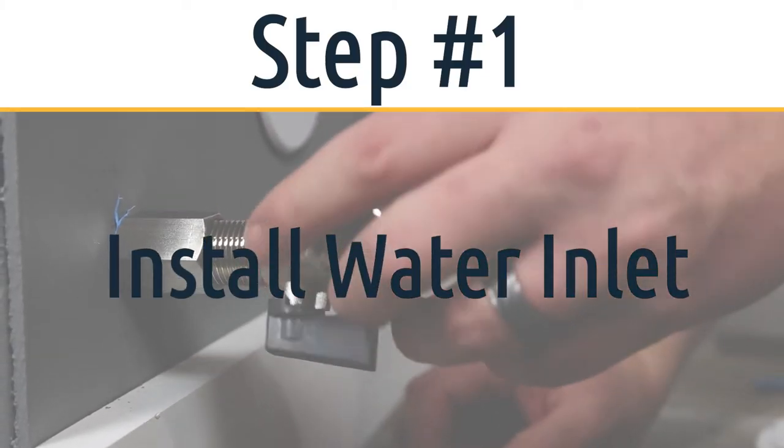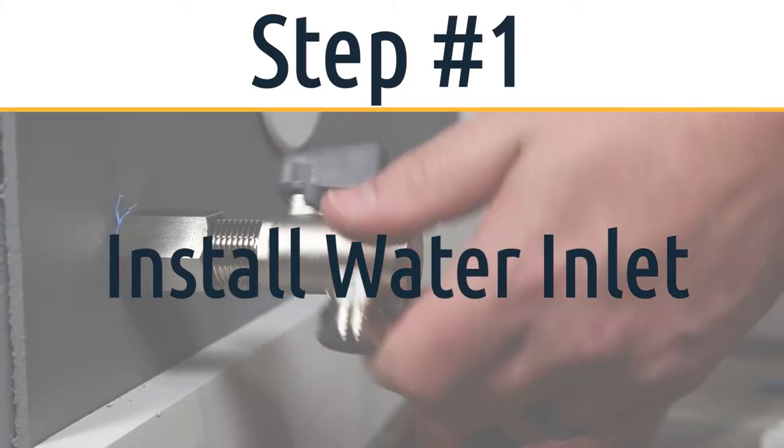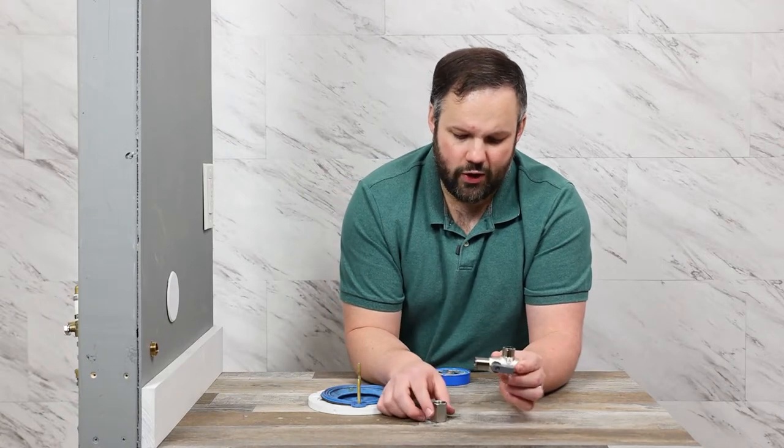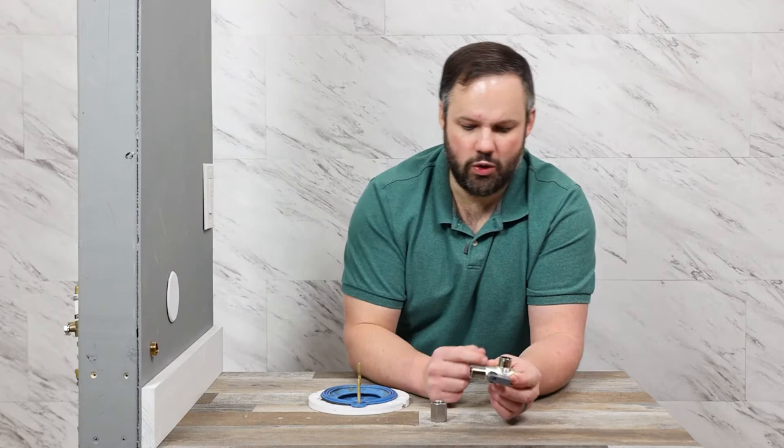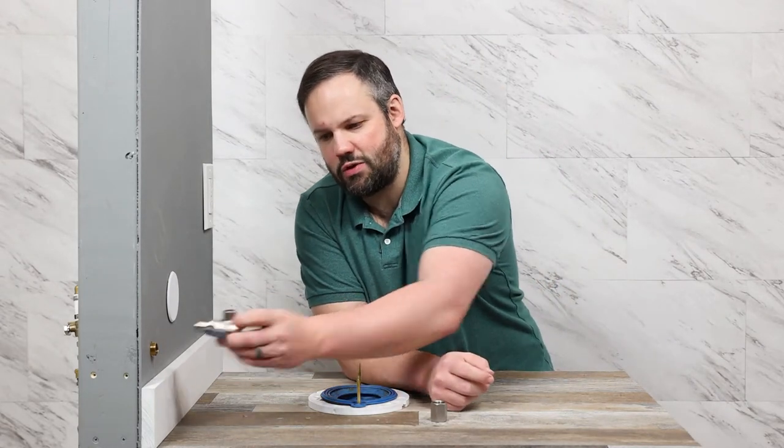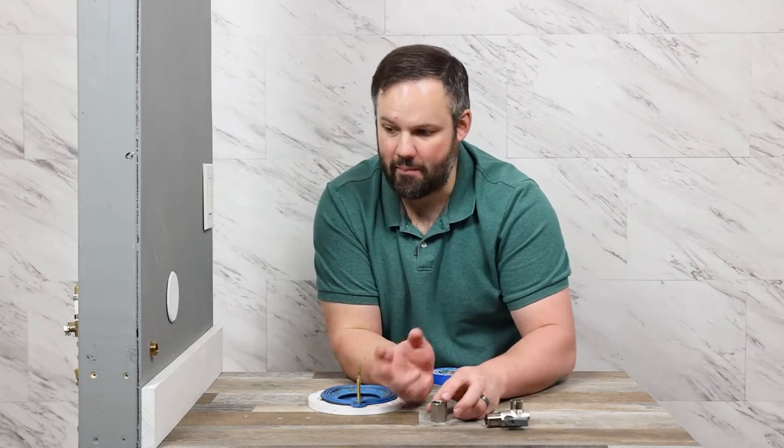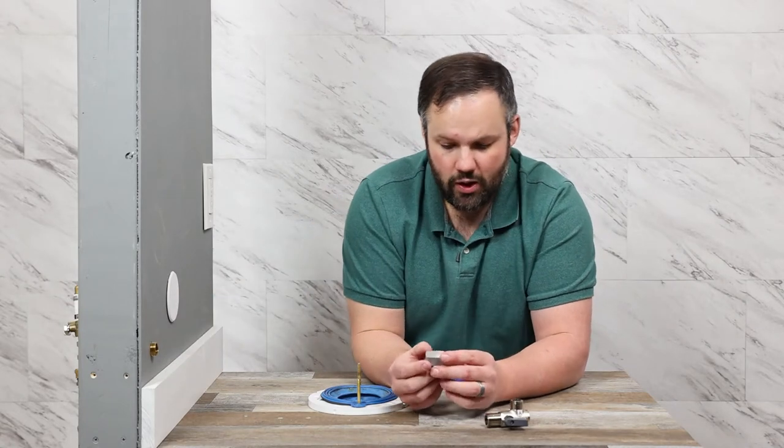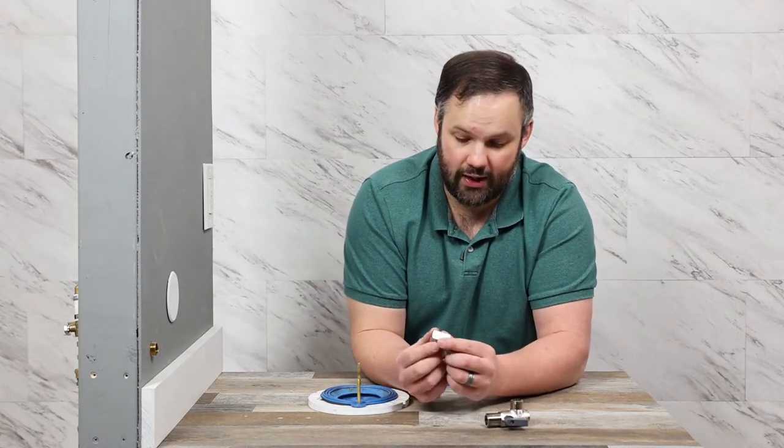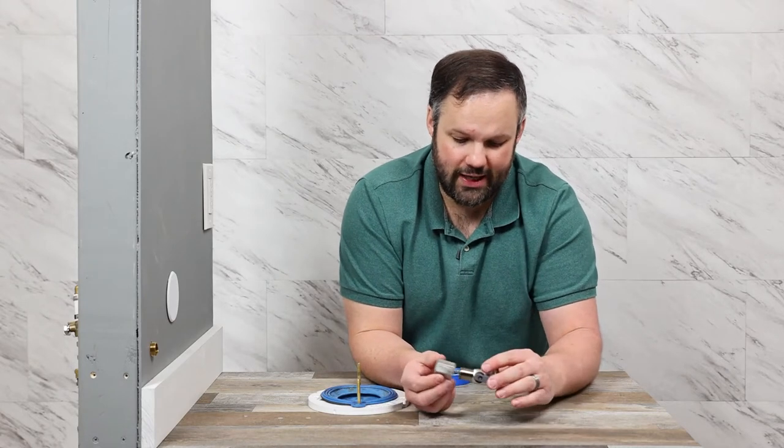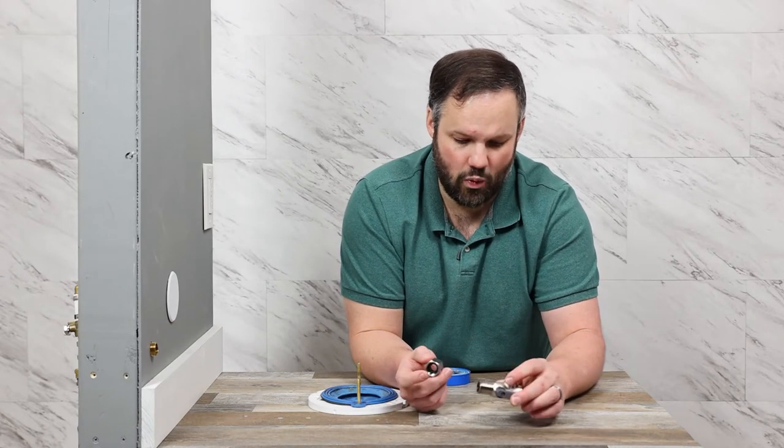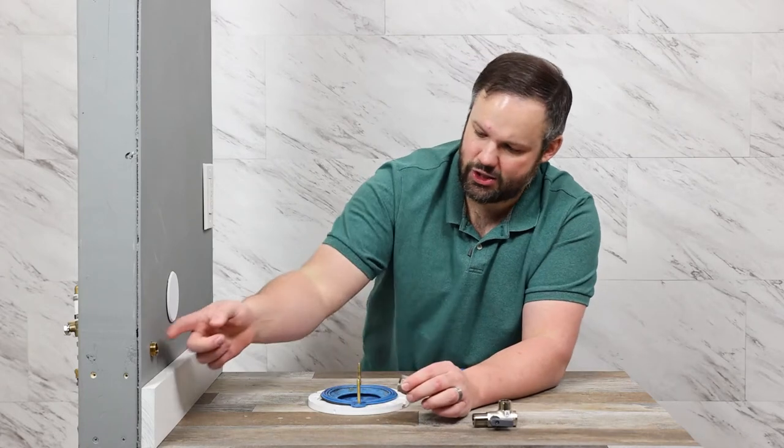So we're going to start by installing the water inlet connector. Now, if you have a female end coming out of the wall, you would just connect this directly to that. Or if you have a male end coming out of the wall like we do, you're going to use the adapter that comes with the unit. There's an N and a G. The G attaches to this water inlet, and the N attaches to the wall.